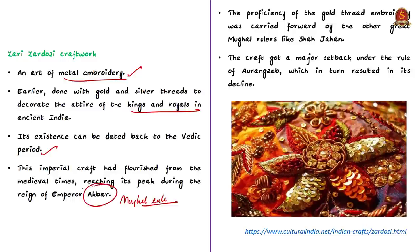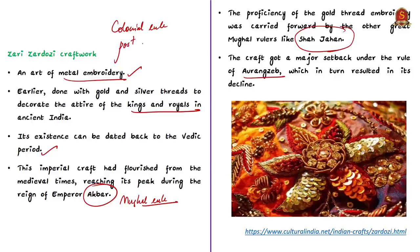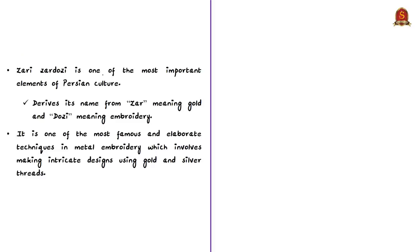The proficiency of this gold thread embroidery was carried forward by other great Mughal rulers like Shah Jahan. However, immediately after Shah Jahan, this craft suffered a major setback under the rule of Aurangzeb. During the colonial period, there were no patrons for this work and it was almost neglected. Post-independence, this craftwork was patronized and got a fresh lease of life. Know that Zari Zardosi is one of the most important elements of Persian culture. The name is derived from two Persian terms: Zer means gold and Dozi means embroidery — so it is golden embroidery. It is one of the most famous and elaborate techniques in metal embroidery involving intricate designs of gold and silver threads. The craftsmen were called Zardoz during the Mughal period.